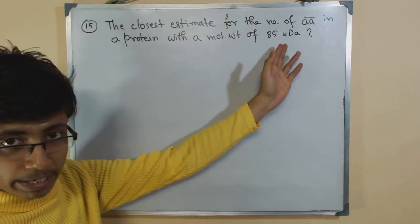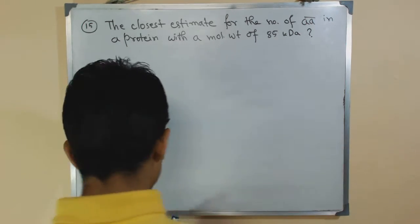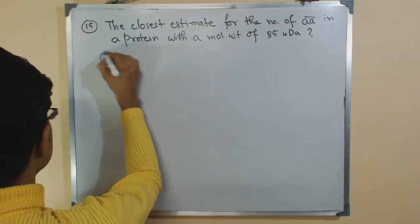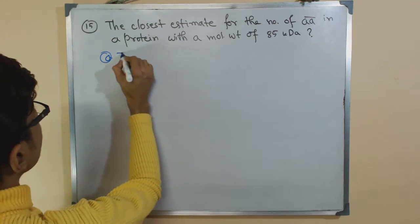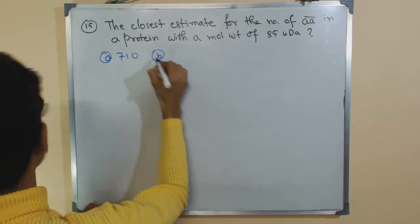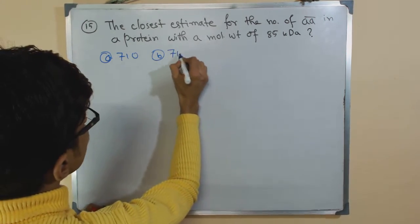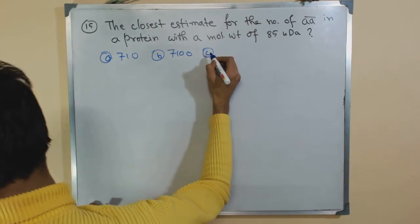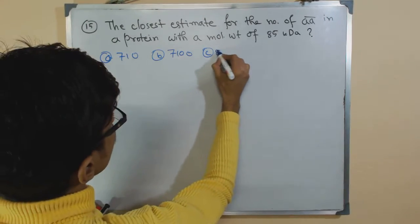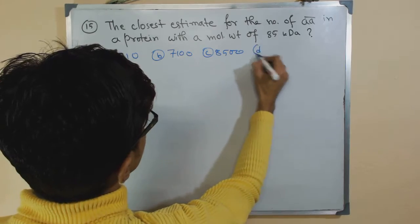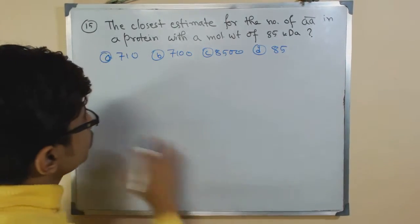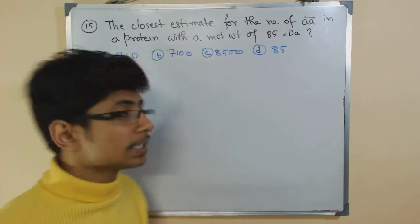I forgot to put the options. The options are: option A is 710, option B is 7100, option C is 8500, and option D is 85. These are the estimates. That is the question.